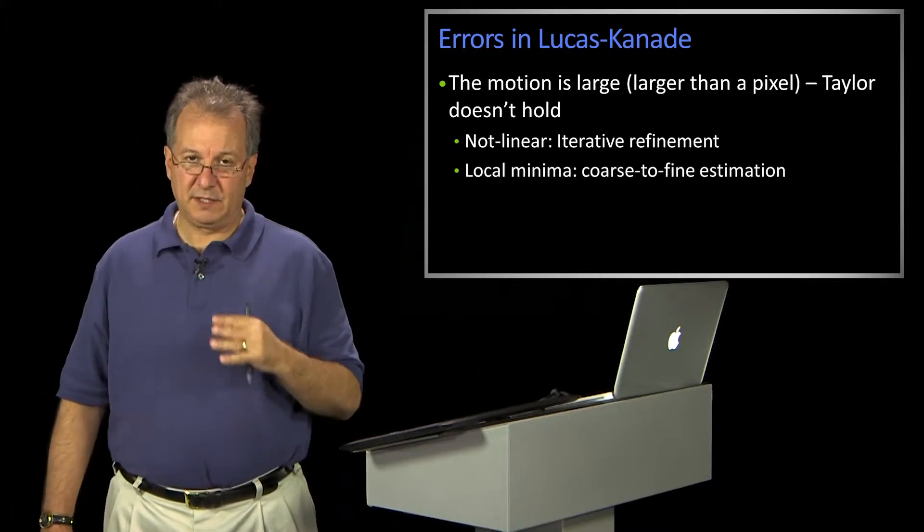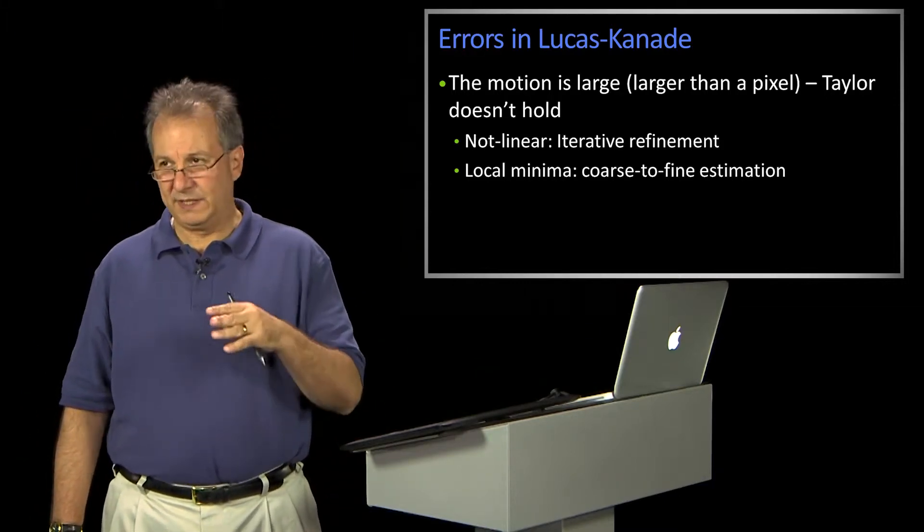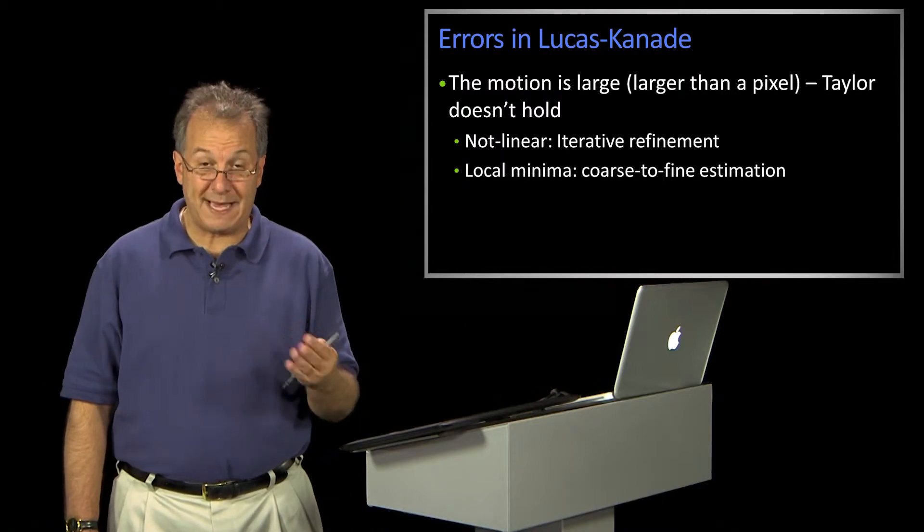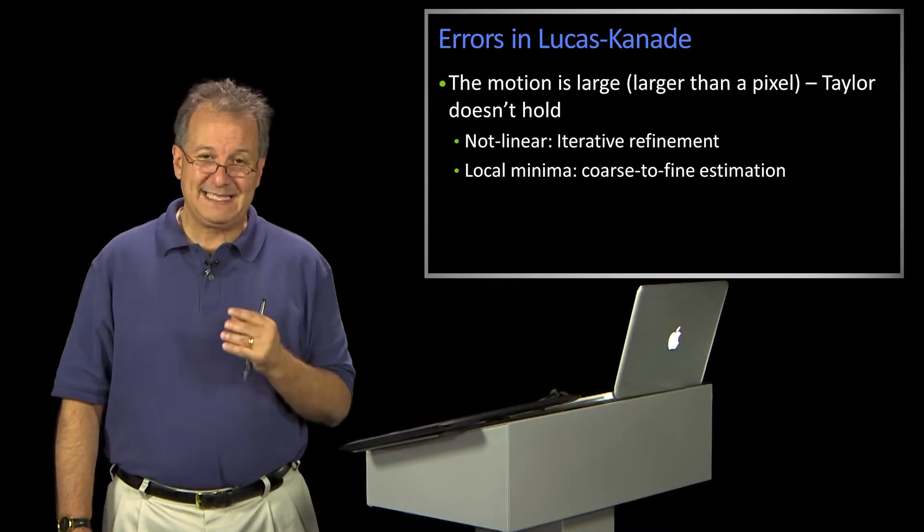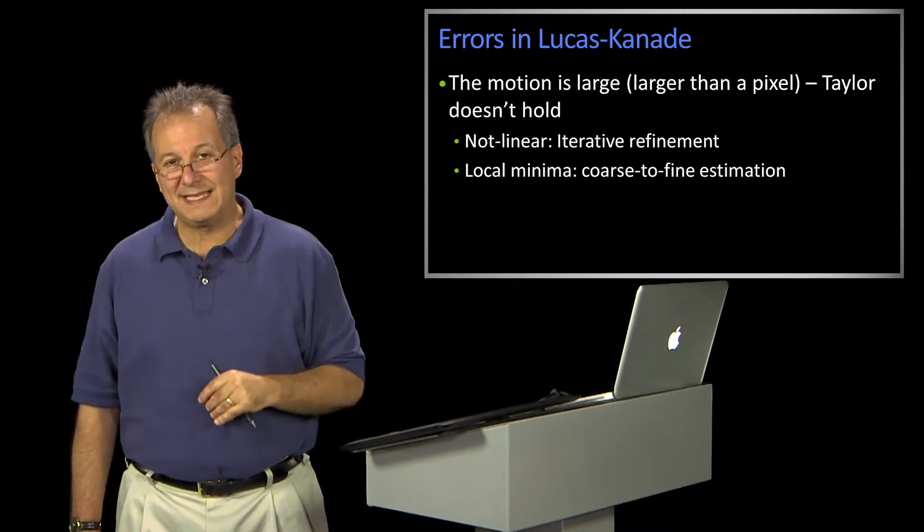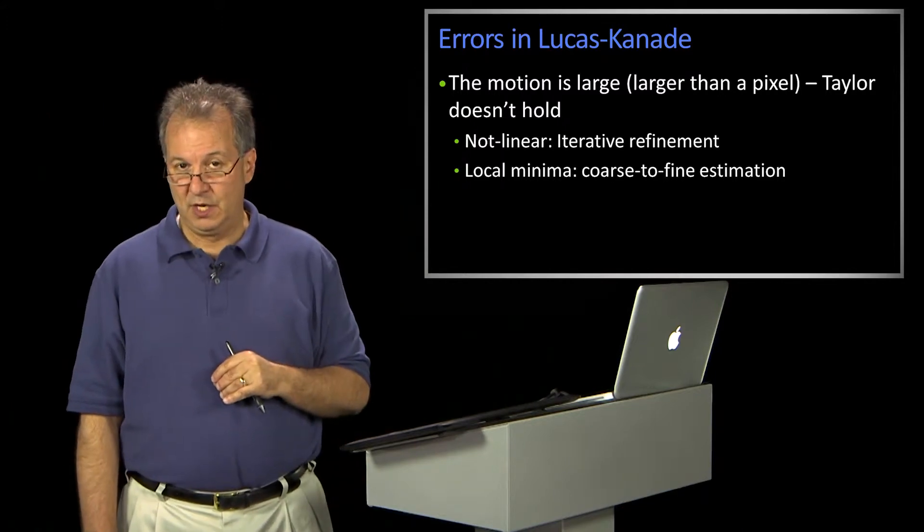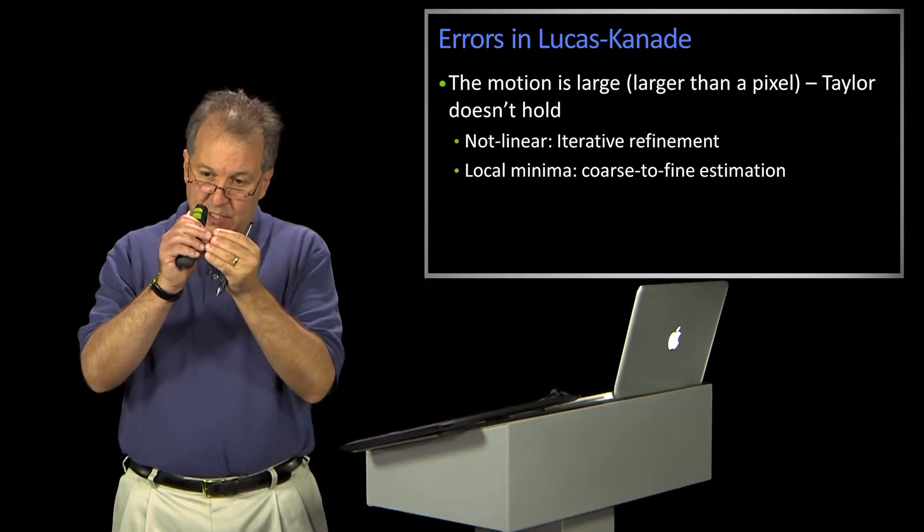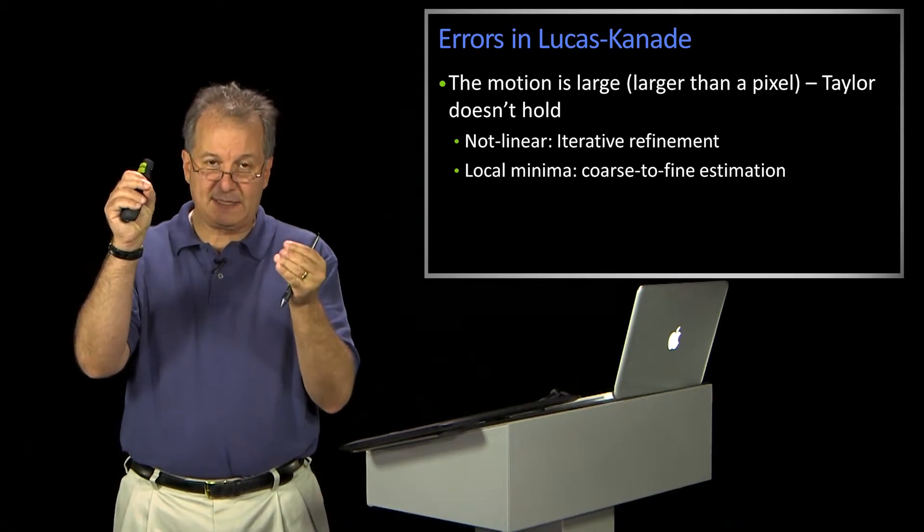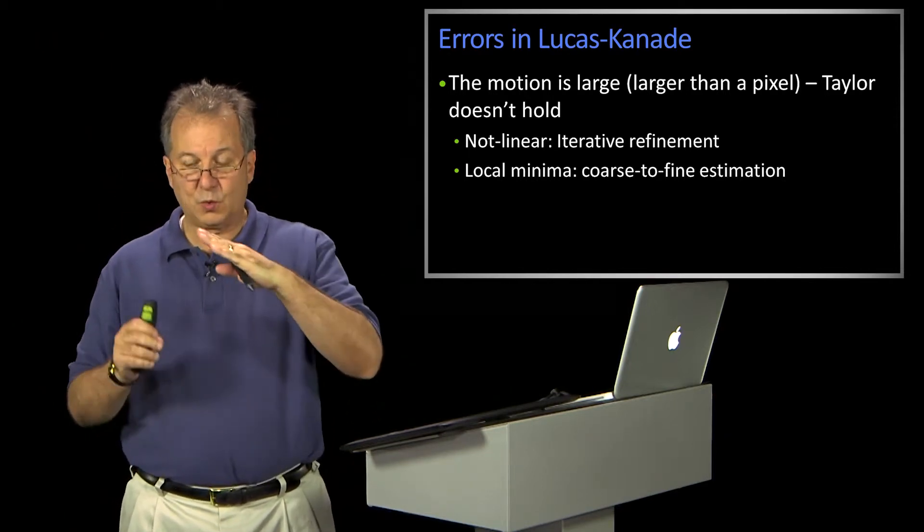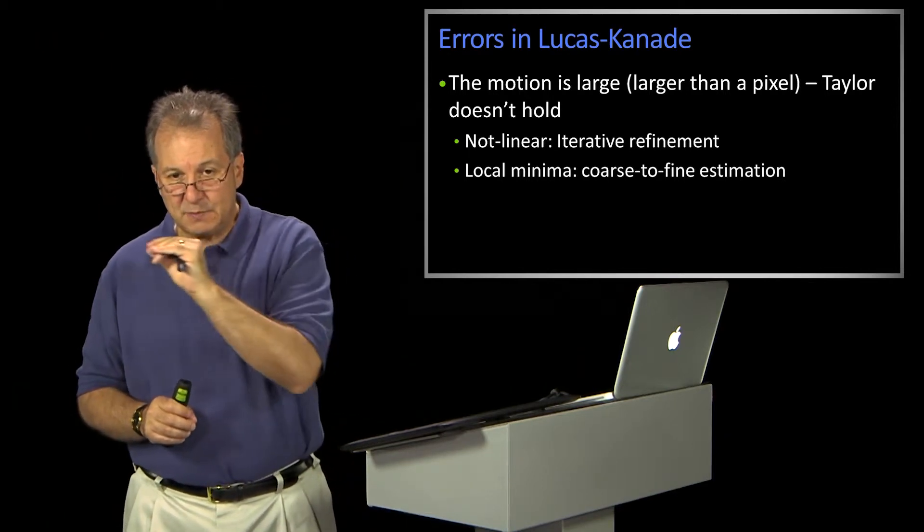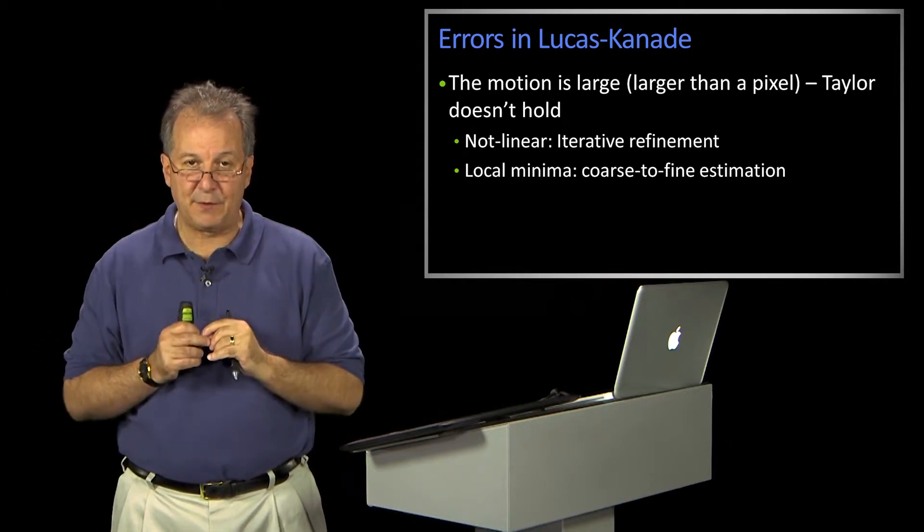But the most fundamental assumption of Lucas-Kanade, or at least the one that is most problematic yet fixable, is this idea that we can use that Taylor series approximation. The idea of the Taylor series approximation is that we can make a small ramp estimate that is first order linear. And then as things move a little bit, that'll tell us how things change.